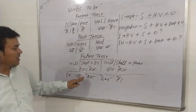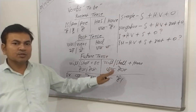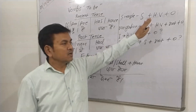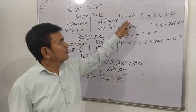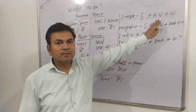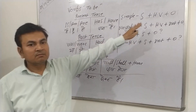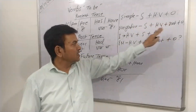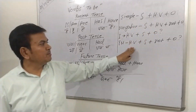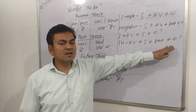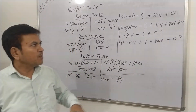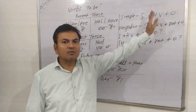To understand this chart, I have a sentence, and to make this sentence we need a formula also that I have written here. For simple affirmative: subject, helping word, object. Negative: subject, helping word, not, object. And interrogative: helping word, subject, object. And interrogative negative: helping word, subject, not, object. So to make any sentence you need three parts: subject, helping word, and object.